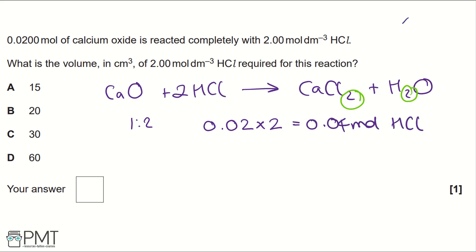Using the equation triangle NVC, we can work out the volume using concentration and moles. We take the moles and divide by the concentration of 2 moles per decimetre cubed, which gives us 0.02 decimetre cubed of hydrochloric acid.